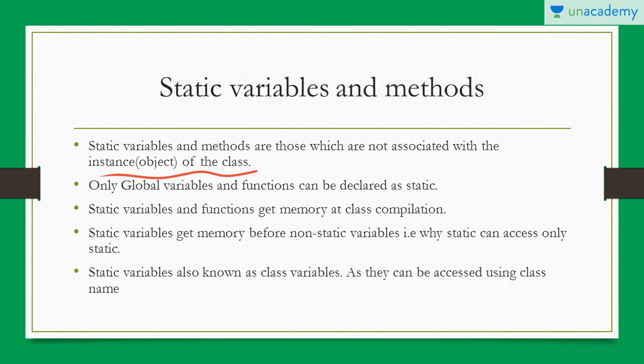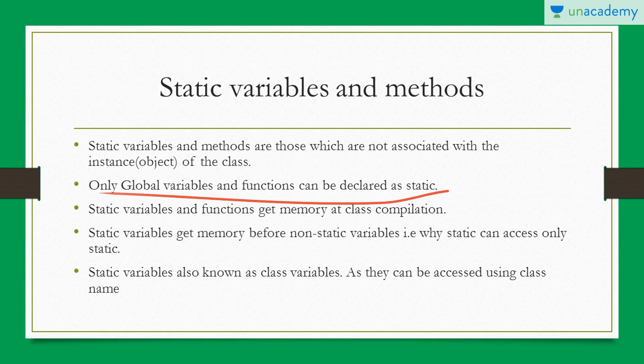If we want to access any variable and method which is static, we do not require the object of that class in which they are defined. Only global variables and functions can be declared as static — no local variable which is declared in any function can be declared as static.